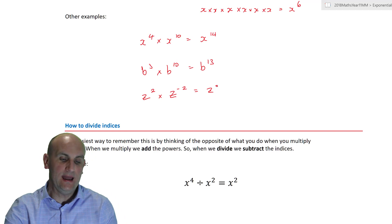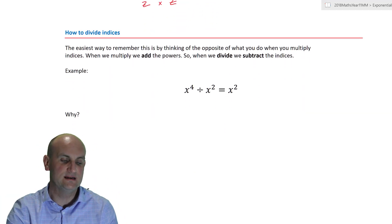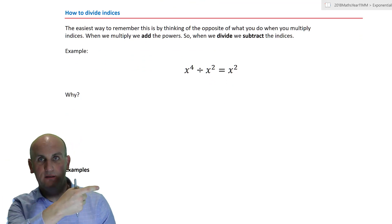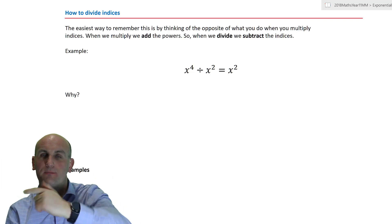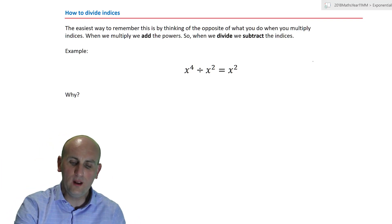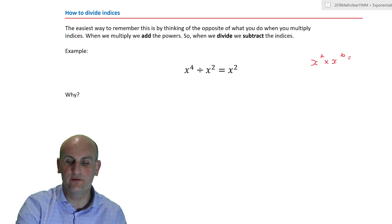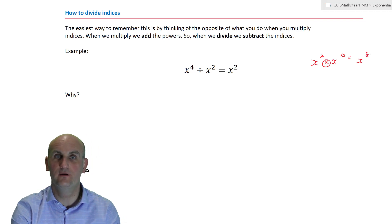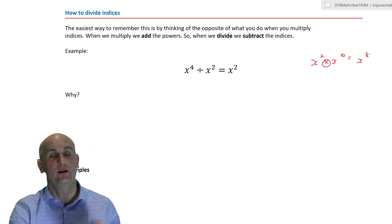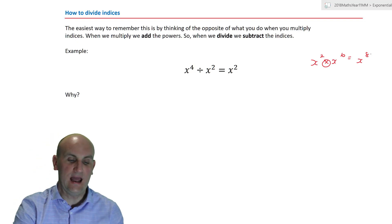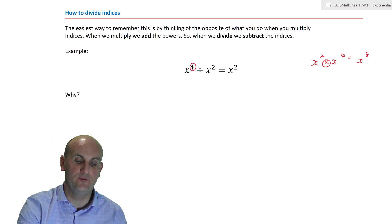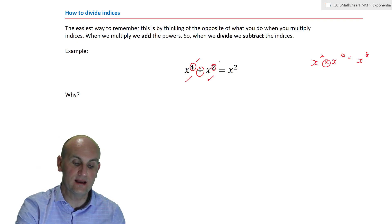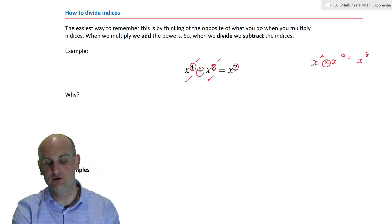So there was Zero, and we were looking at the zero power. When dividing indices, we do the reverse of multiplying. If x squared times x to the power of six gives x to the power of eight by adding, then when we divide we subtract. So x to the power of four divided by x to the power of two: subtract the powers, four minus two is two.